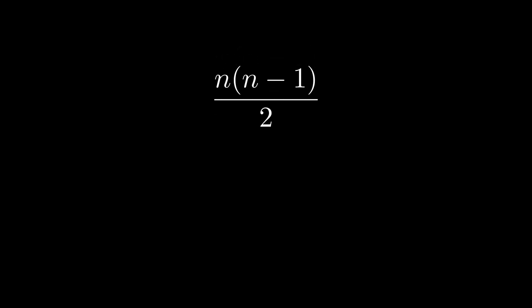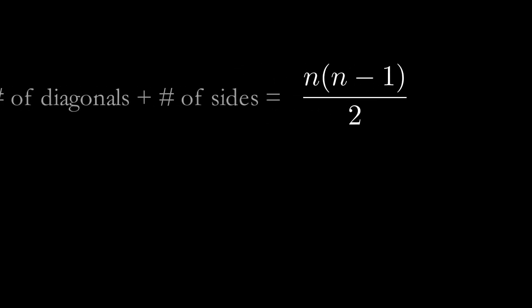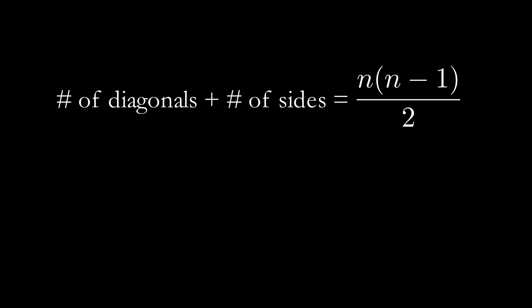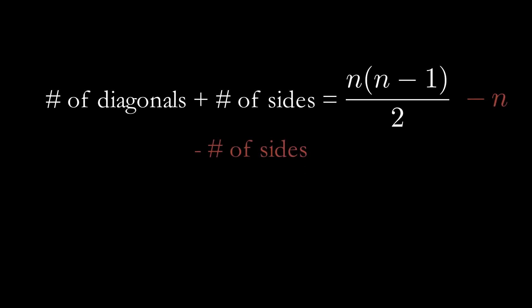Now, we're almost done. Currently, our formula counts the total number of lines that can be drawn between two points of a shape, which includes the number of diagonals and the number of sides. To make our formula accurate, we need to subtract n, which is the number of sides.